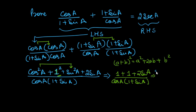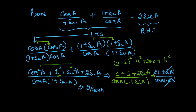Can we take a 2 common? Yes, giving 2(1 + sin A) over cosec A × (1 + sin A). The common factor (1 + sin A) cancels out, leaving 2 over cosec A — but wait, the denominator in the expression is cos A. So we get 2 over cos A, and the reciprocal of cos A is secant A. Therefore, 2 over cos A = 2 sec A.